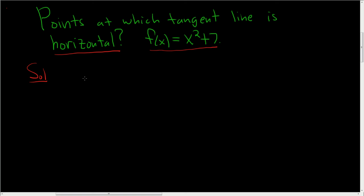The tangent line will be horizontal when the derivative is zero. Why? Because the derivative of f at x, this is the slope of the tangent line at x.